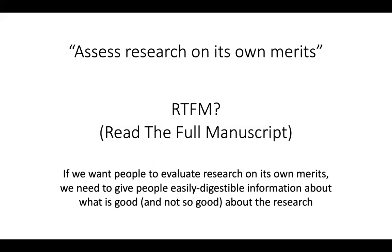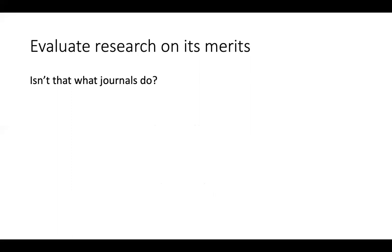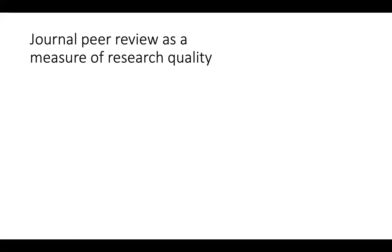If we put our assessment expert hats on and ask whether journal peer review, as an operationalization of the construct 'research quality,' is a good measure — I think it would fail some of the most basic tests. Most journals don't define what they mean by quality: what qualities do they want reviewers and editors to emphasize? What are the bases for their decisions? And the evaluations are kept hidden — we don't see what reviewers say, the editor sees it but everyone else loses that information.